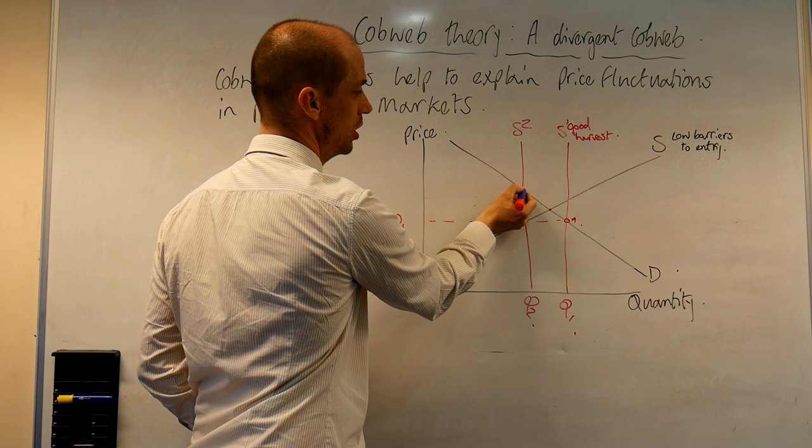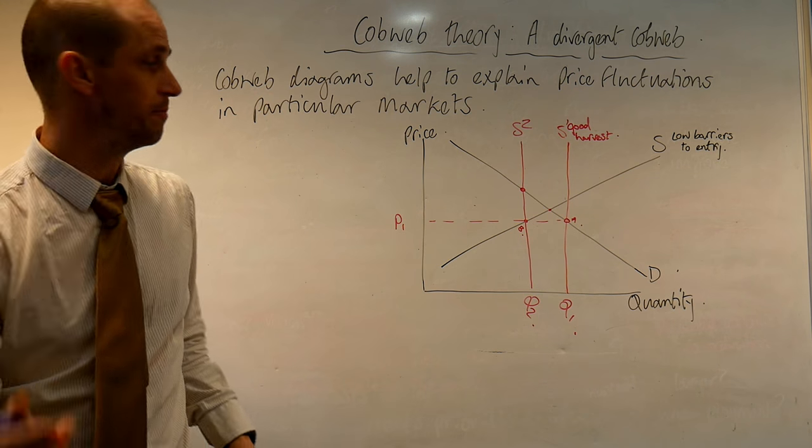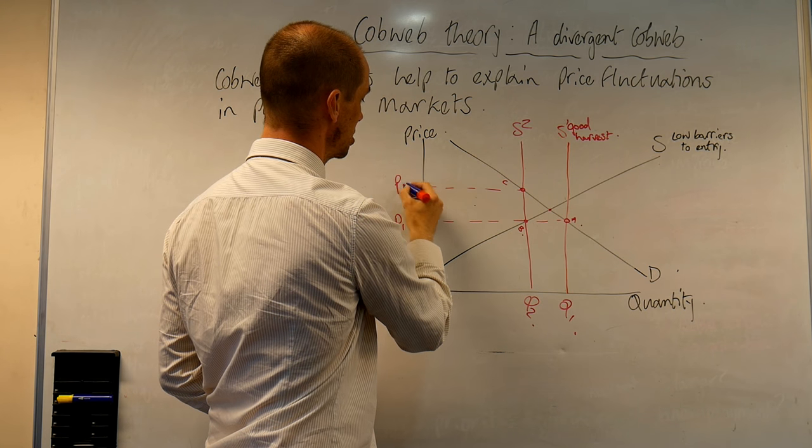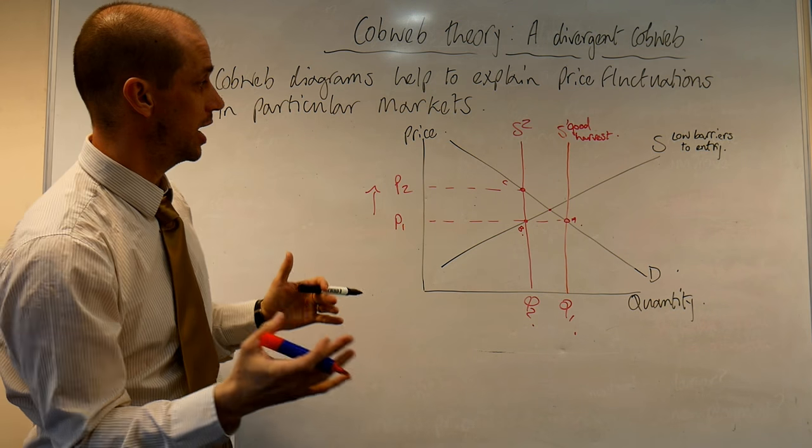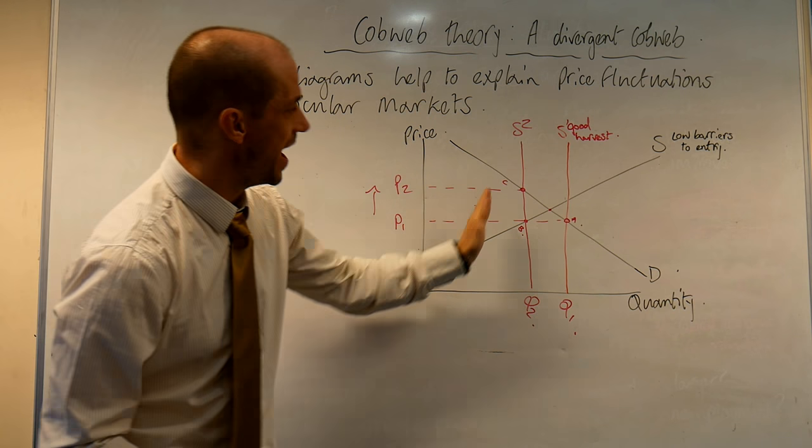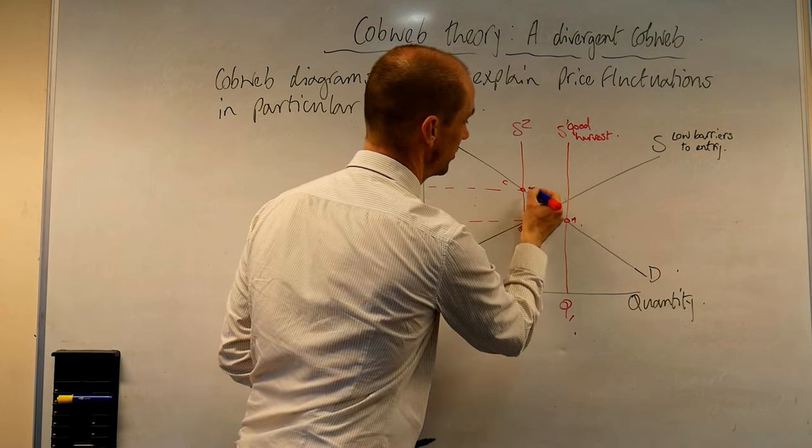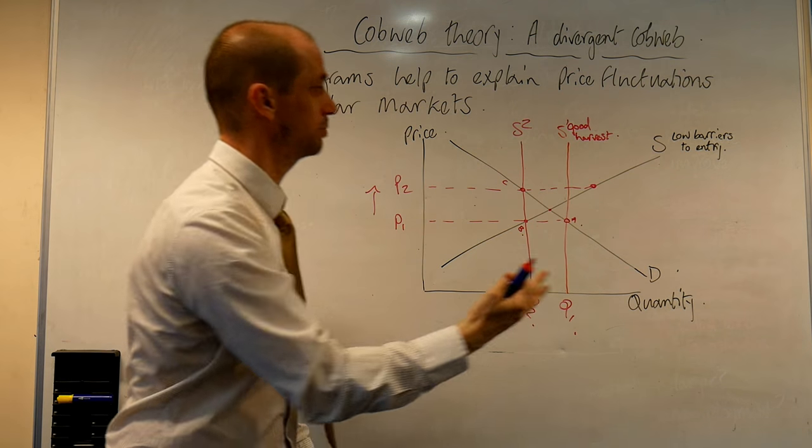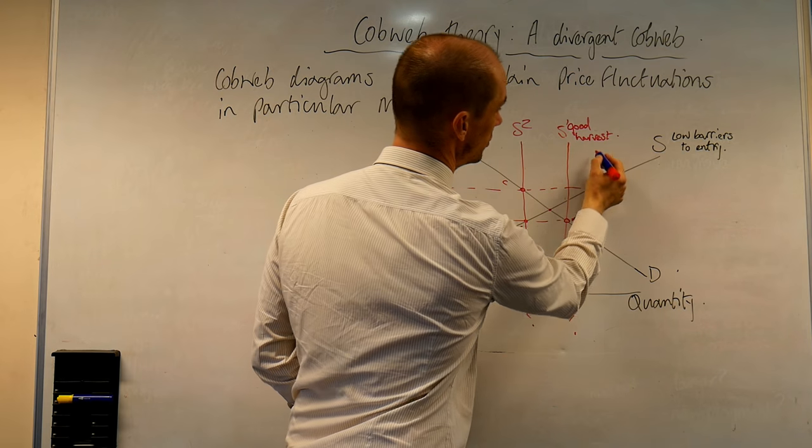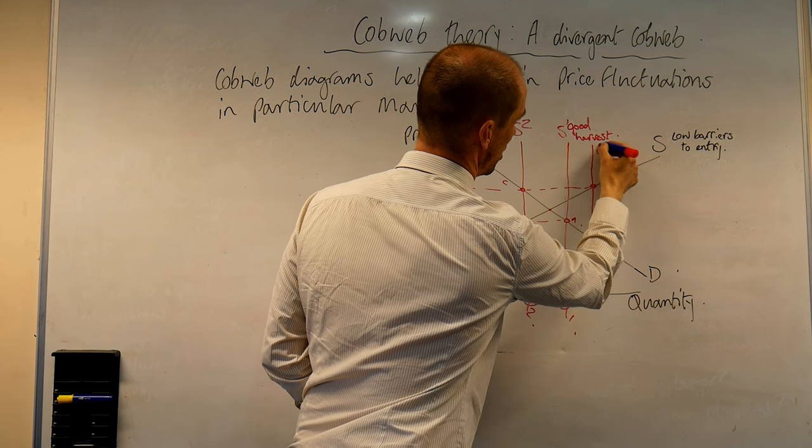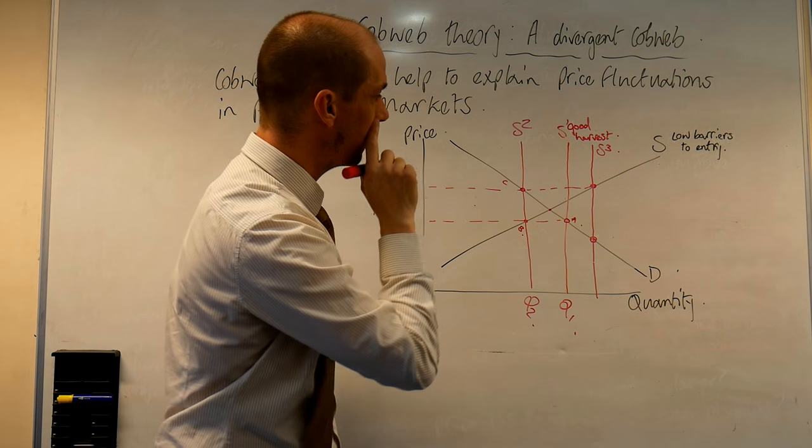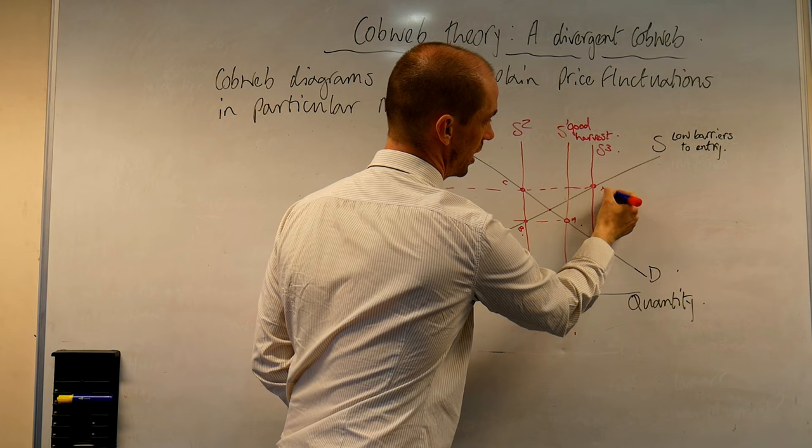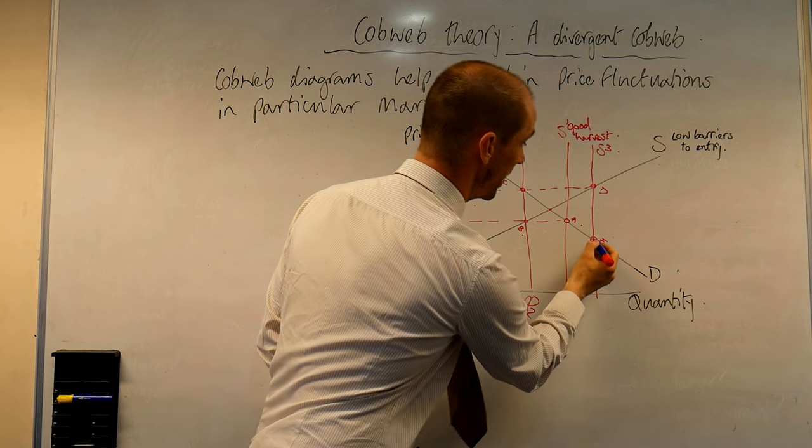The problem is we then have, let's label point B there, we then have point C. Point C would now be our given price level. We can see that the price has actually increased substantially based on that information. Now what's interesting about this is how this now disrupts the market once again. We can see that at price of P2 in the next period, farmers will actually want to produce supply curve 3.